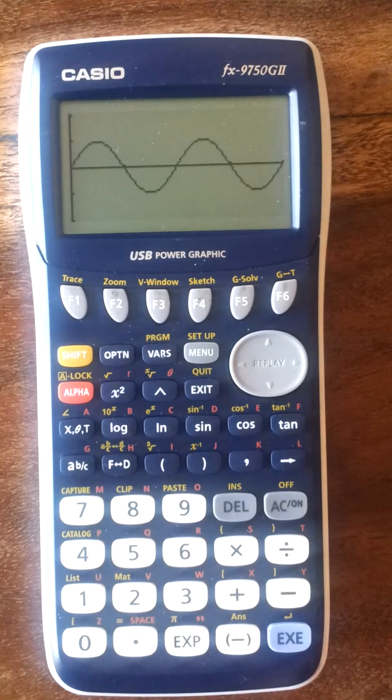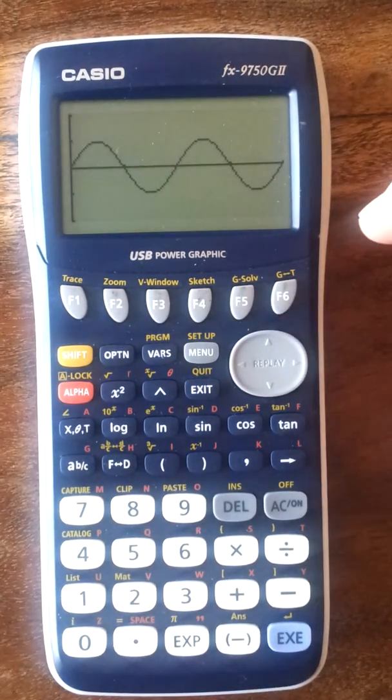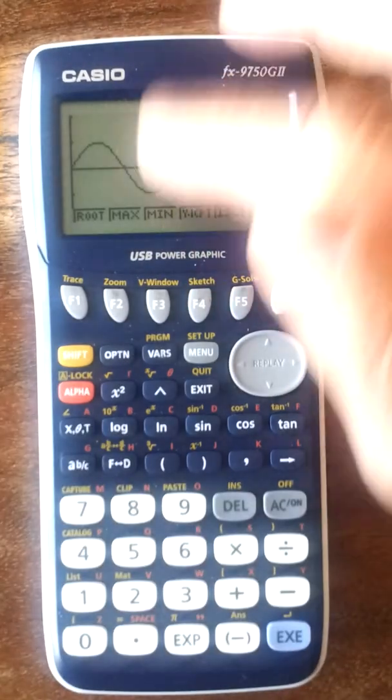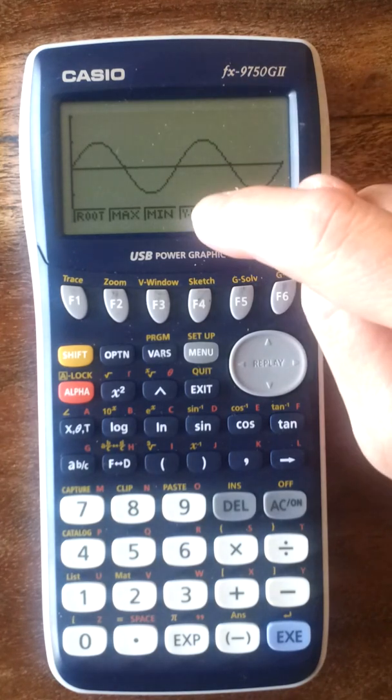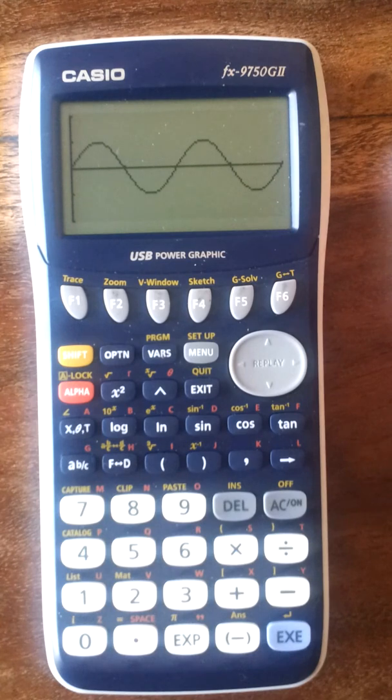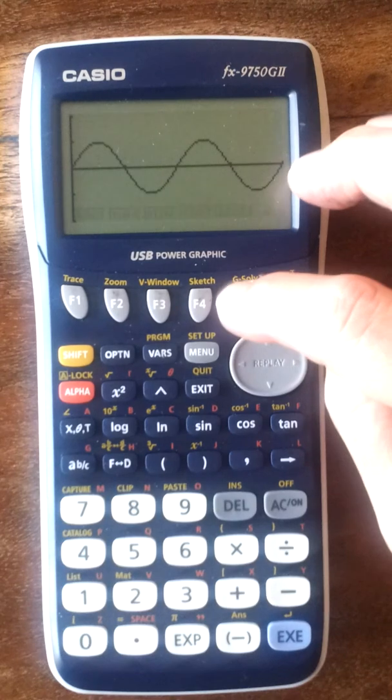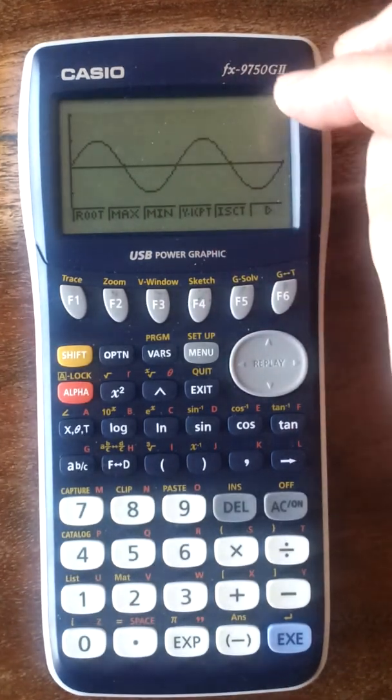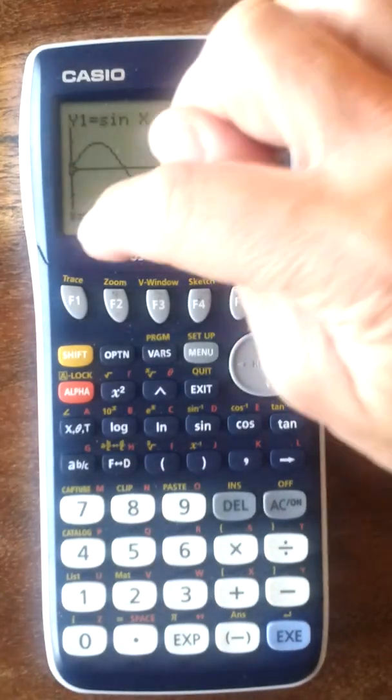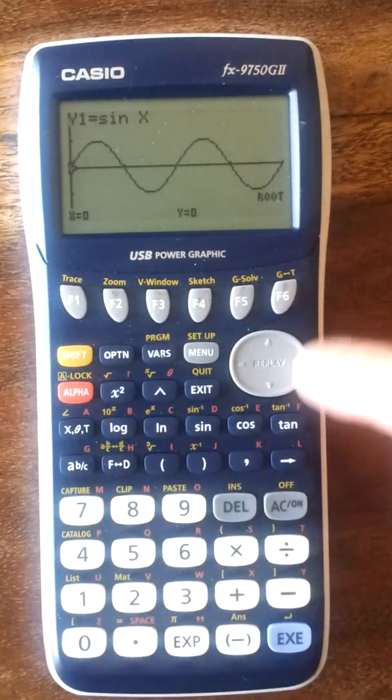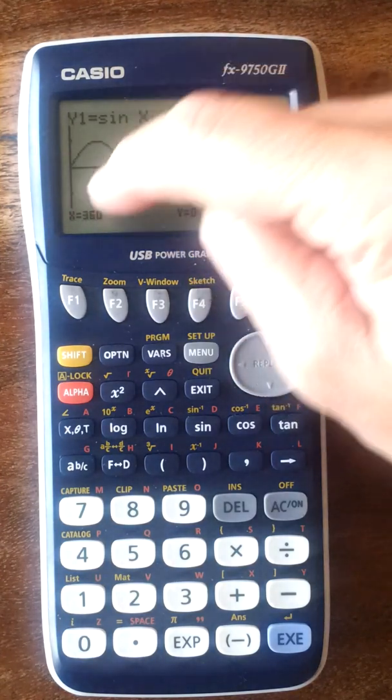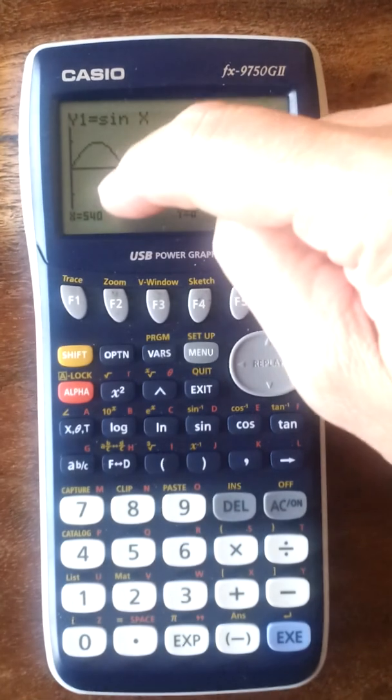Now once you've got these, you can do a few things. On this one, I can press G-solve. G-solve gives us various things. Notice if I want the root, the root is where it cuts the x-axis. I can't have the intersection because there's only one graph. If I press G-solve again, now I want which one? Root. We can get this one, root, which is F1. Now there's the first root. Can you see the cross in there? So it gives you x equals 0, y equals 0. Now we can get the rest of the roots by using the replay button. If you press along, that's the next root. x is 180, y is 0. Next one, x is 360, y is 0. Next one, x is 540, y is 0. And so on.